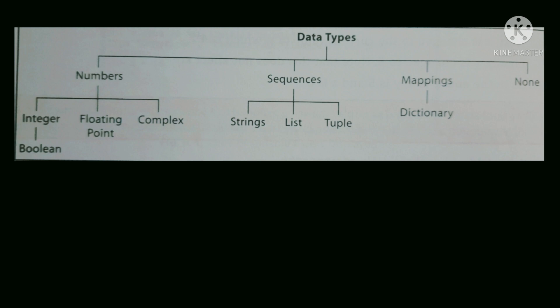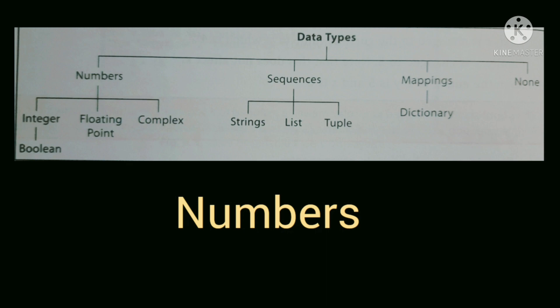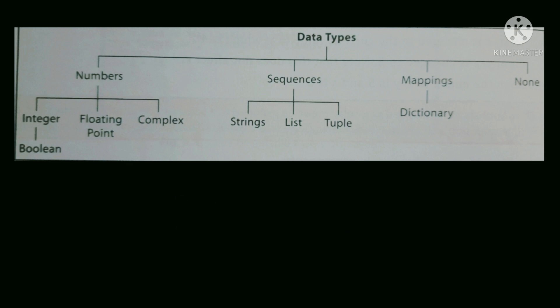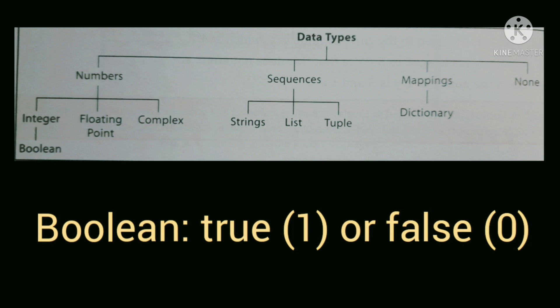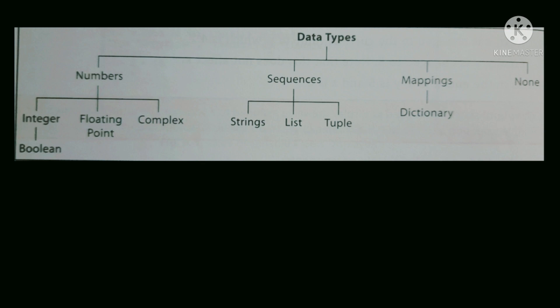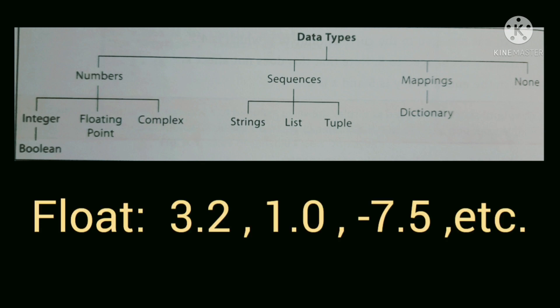Now, data types. Python has a lot of data types. The numbers data type stores only numeric values. The subtypes of numbers are: integer, which represents only whole numbers with no fractional part; boolean, which is a subtype of integer and contains only two values — true or false, written as one or zero; and floating point values, which are real numbers with decimal parts, for example 3.2 or 1.0.